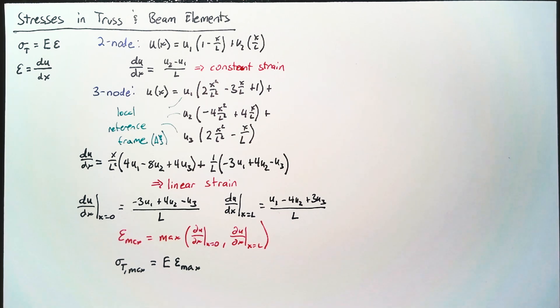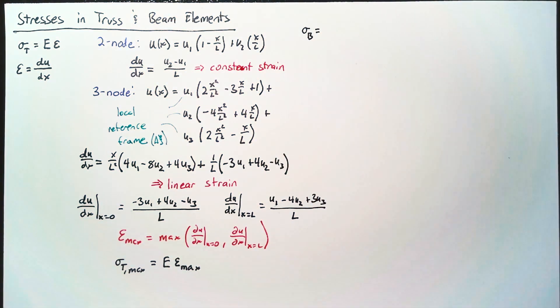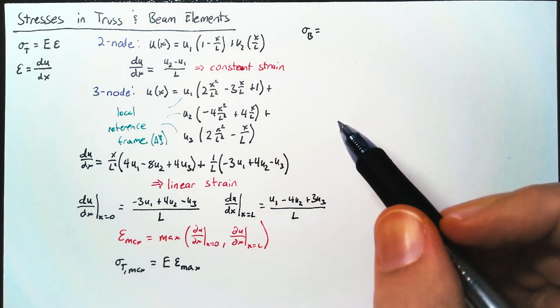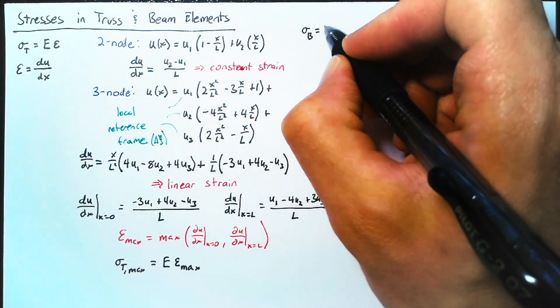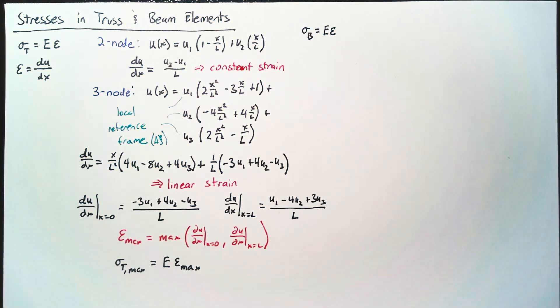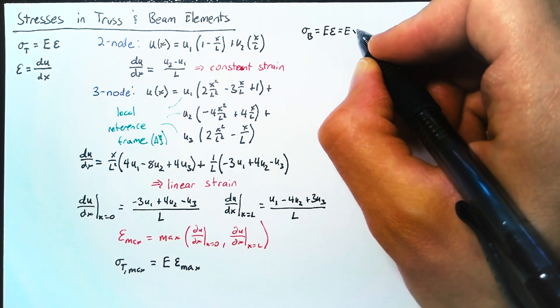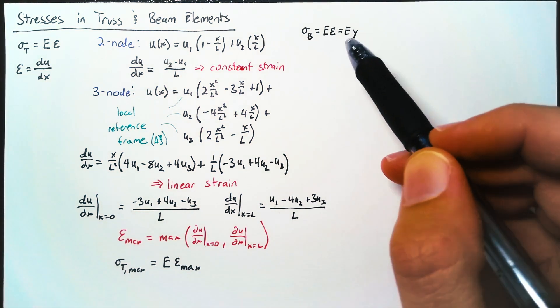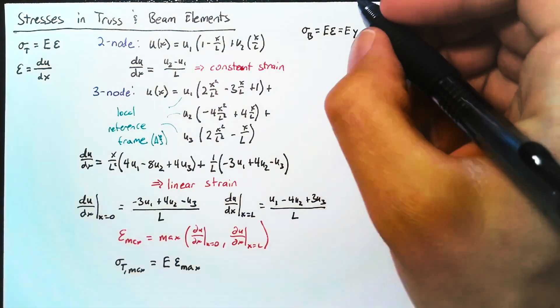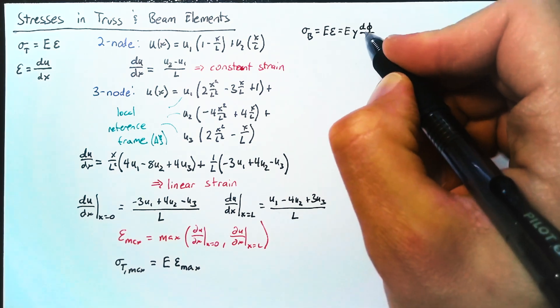Let's go take a look at our beam elements. So the stress in a beam element looks a little bit different because the only way that we get a tensile or compressive stress is through the bending. And so what this looks like is, again, just our Young's modulus multiplied by our strain. But that strain is now the vertical distance from the centroid of our cross-section to the location inside the beam multiplied by the change in the rotational displacement with respect to X.